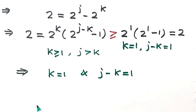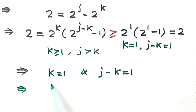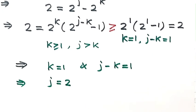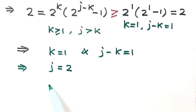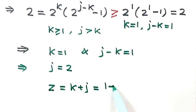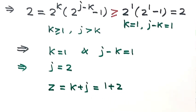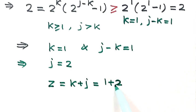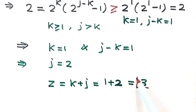Since the left-hand side equals exactly 2 (the minimum value), we must have k = 1 and j − k = 1, so j = 2. Because z = k + j = 1 + 2, we get z = 3.